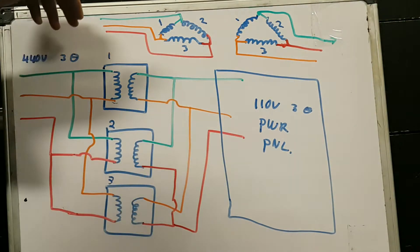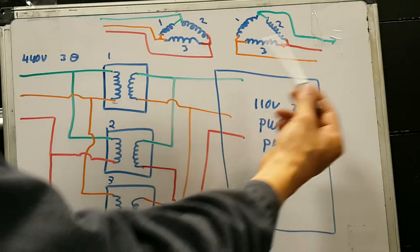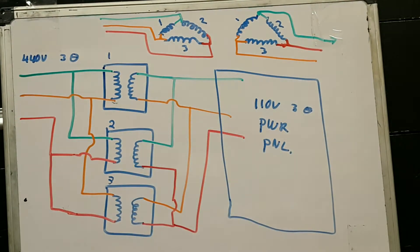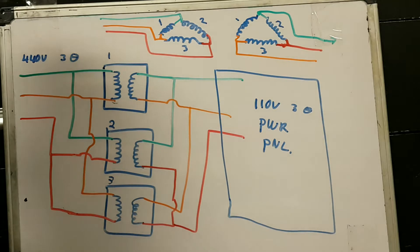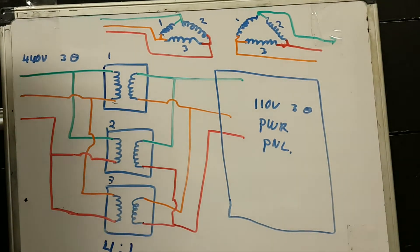So this side is connected in delta, and this side, as you can see, is also connected in delta. As you already imagine, the ratio, these transformers are four to one. So the voltage over here will be always four times less than this one.